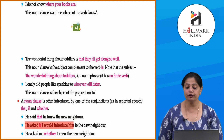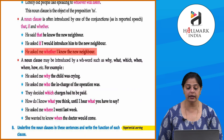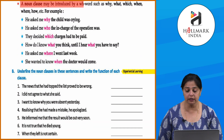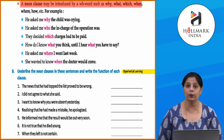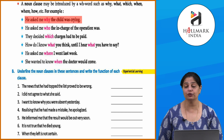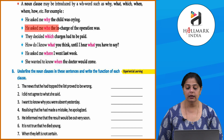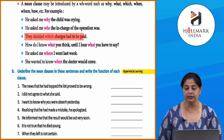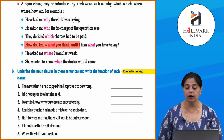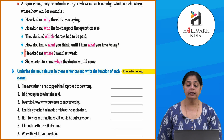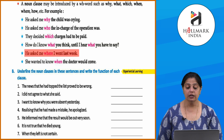'He said that he knew the new neighbor' — noun clause introduced by 'that.' 'He asked if I would introduce him to the new neighbor.' 'He asked me whether I knew the new neighbor.' A noun clause may also be introduced by WH-words such as why, what, which, when, where, how, etc. For example: 'He asked me why the child was crying' — the noun clause is introduced by 'why.' 'He asked me who the in-charge of the operation was.' 'They decided which charges had to be paid.'